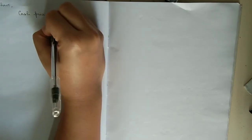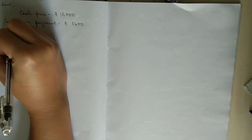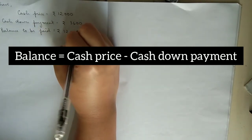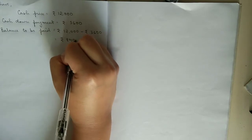We should always write down what is given in the question. First, cash price is rupees 12,000. Next, cash down payment is rupees 3,600. Whenever they give you cash price and cash down payment, you can always find the balance to be paid: cash price minus cash down payment, which is rupees 12,000 minus rupees 3,600, equal to rupees 8,400.